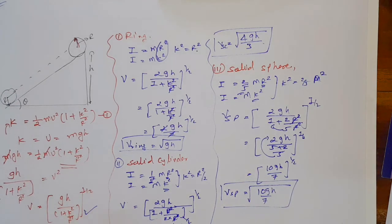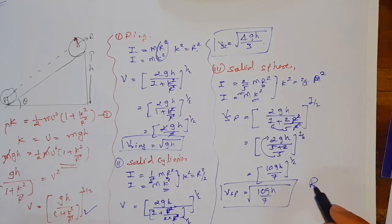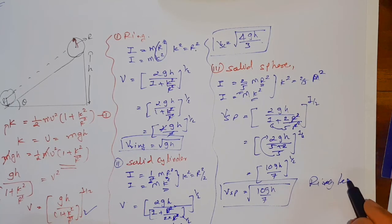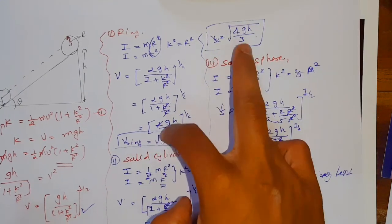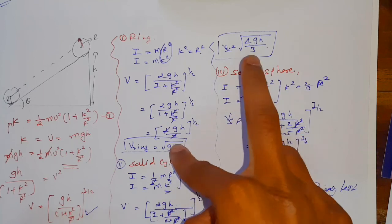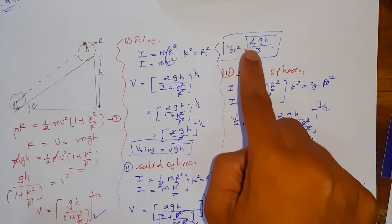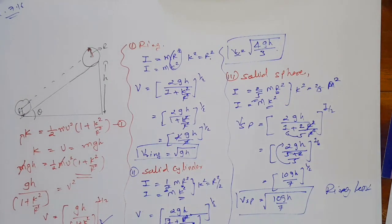So comparing all three results: v_ring = √(gh), v_cylinder = √(4gh/3), v_sphere = √(10gh/7). The ring has the least velocity at the bottom of the inclined plane. Keeping g and h constant, the solid sphere has the maximum velocity. I hope you got this — take care and bye.